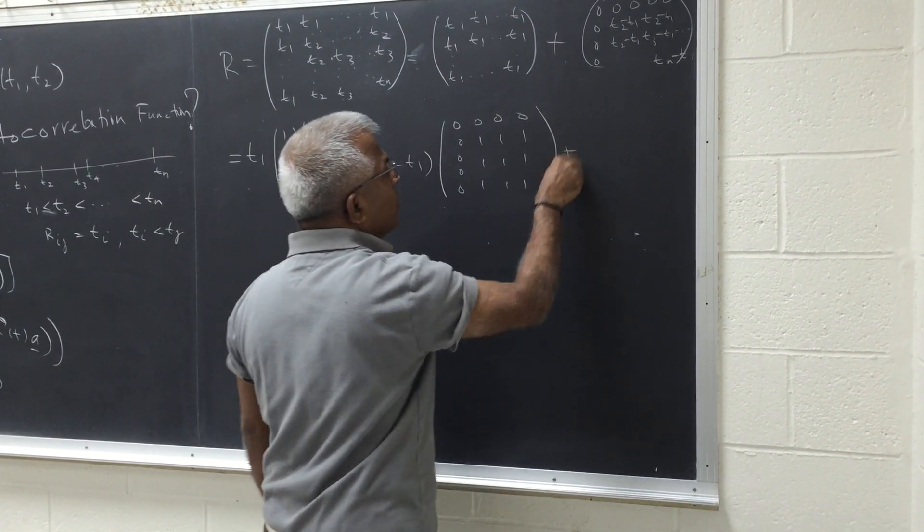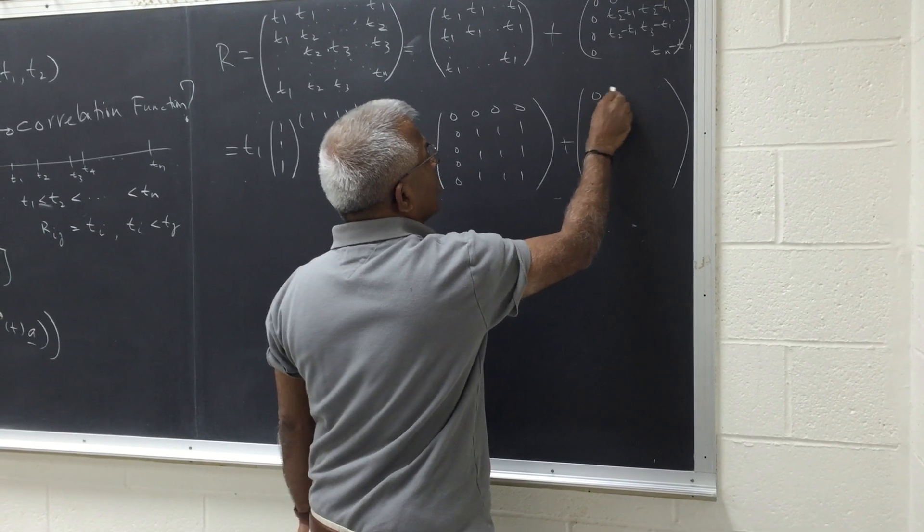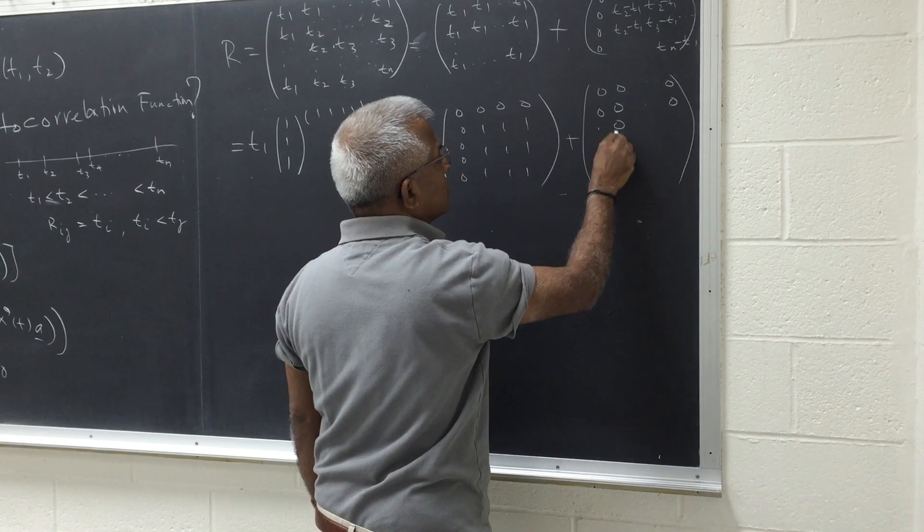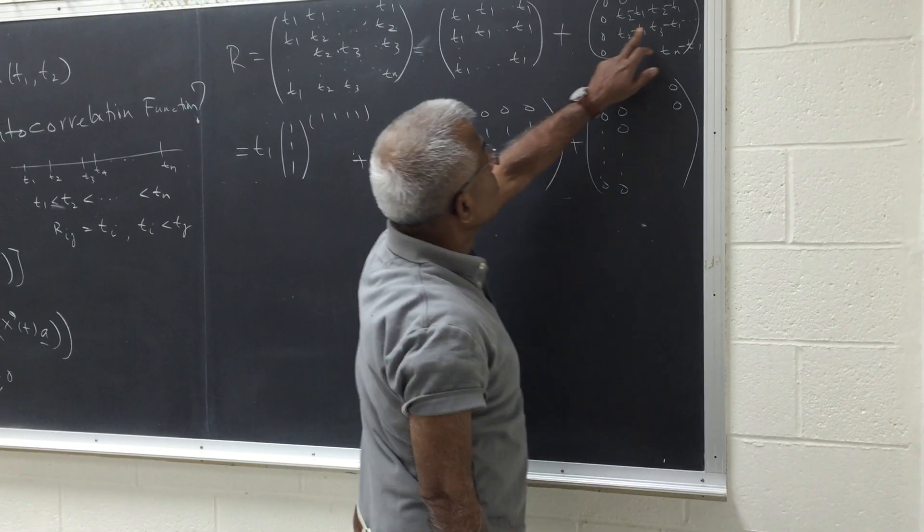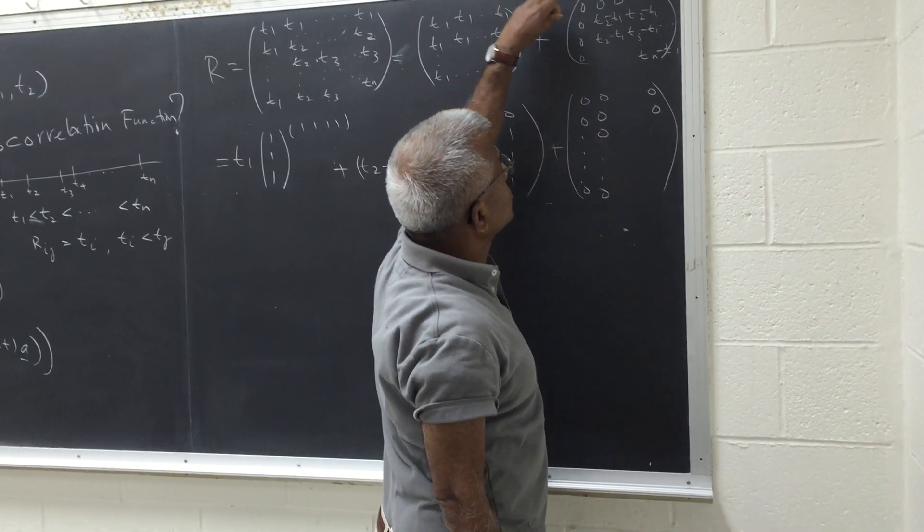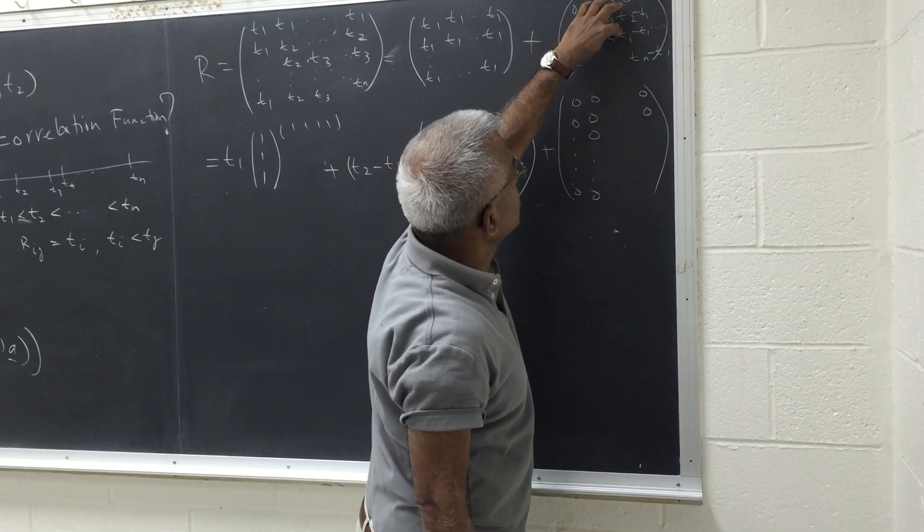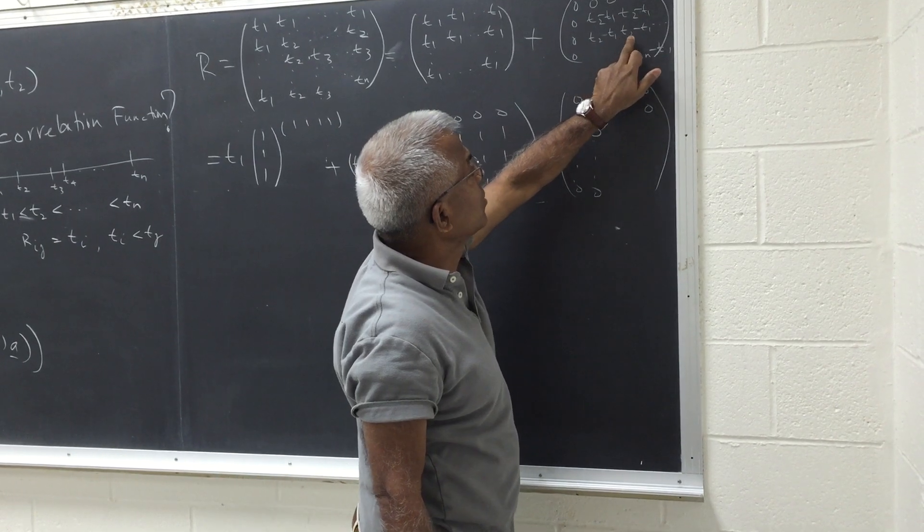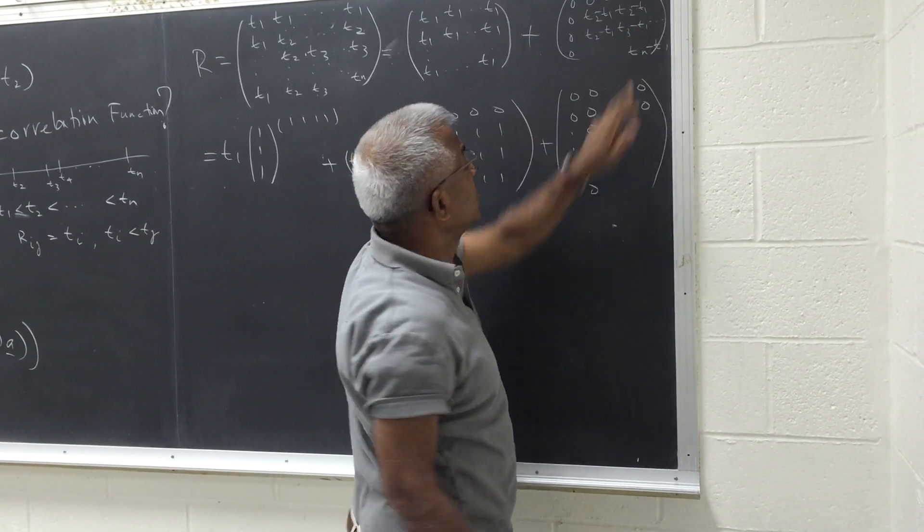And the remaining thing would be all zeroes on the first row, zeroes on the first column, zeroes here, zeroes here. Then remember, so I pulled out t2 minus t1, so this is all zero. From here, from t3 minus t1, if we subtract t2 minus t1, this will turn out to be t3 minus t2.